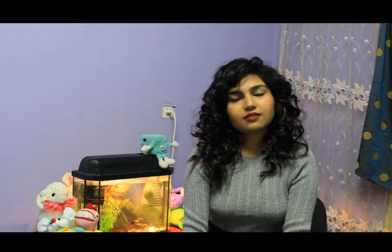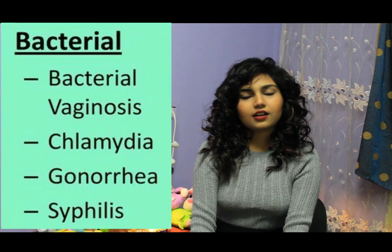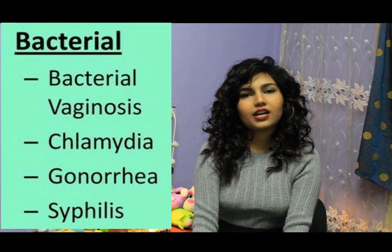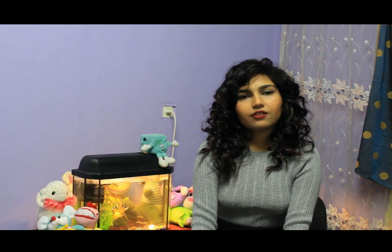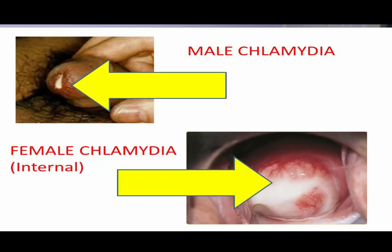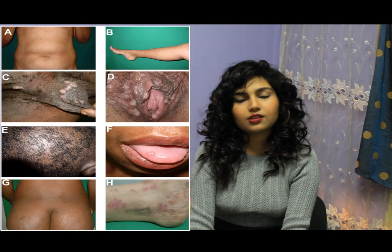The second category is bacterial. The bacterially transmitted diseases commonly are syphilis, gonorrhea, and chlamydia. Gonorrhea can cause infertility, chlamydia causes discomfort in urination and discharge from the genital, and syphilis can show no symptoms at all.